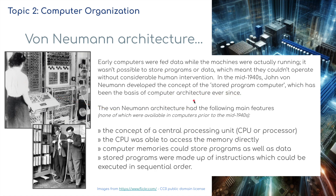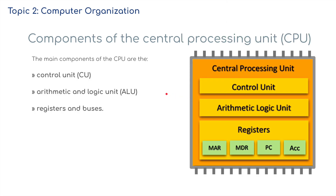The von Neumann architecture has the following main features: the concept of a central processing unit (CPU); the CPU was able to accept memory directly; computer memories could store programs as well as data; and stored programs were made up of instructions which could be executed in sequential order. So let's have a look inside a CPU.